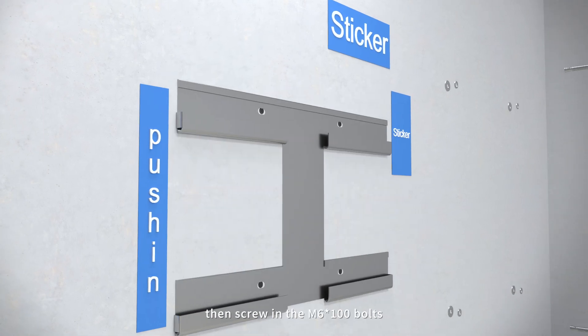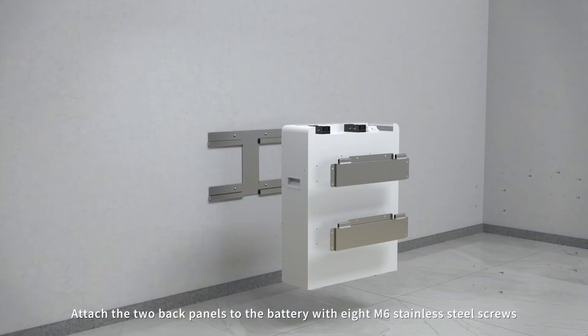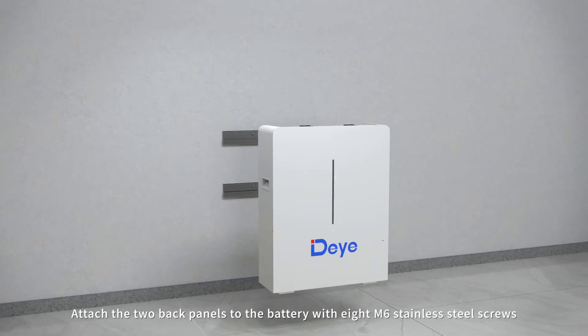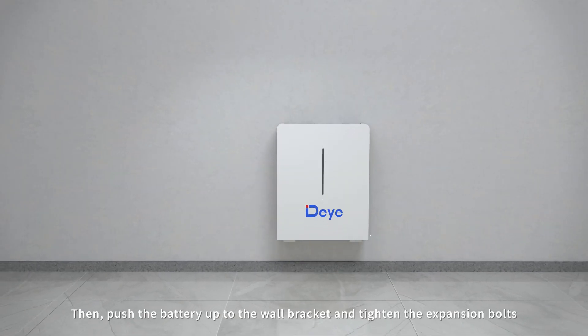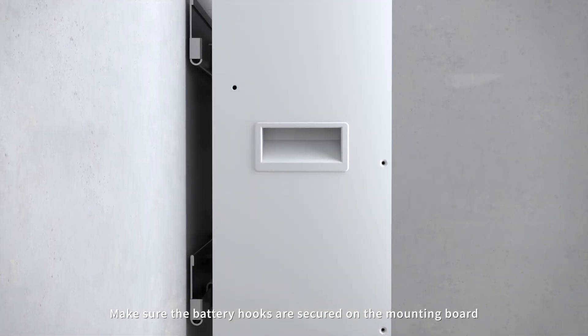Tap in the expansion screws, then screw in the M6 100 bolts. Attach the two back panels to the battery with eight M6 stainless steel screws. Then push the battery up to the wall bracket and tighten the expansion bolts. Make sure the battery hooks are secured on the mounting board. That's the wall mounting done.